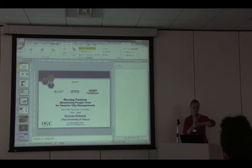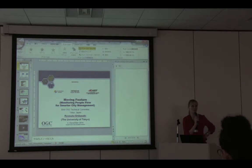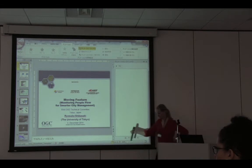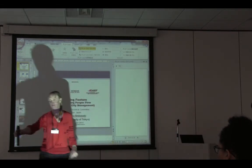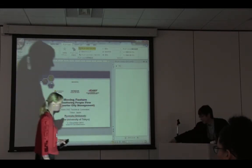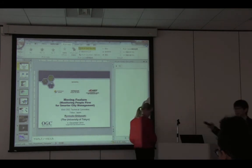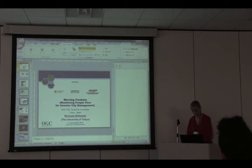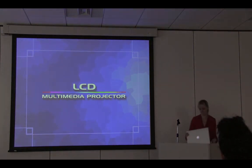Excellent. We definitely have a couple of minutes for questions. Question: The phone data — the cellular phone data — comes as call data records, CDRs. How does that relate to moving features? Is there a lot of transformation needed to go from CDRs to moving features data? What's involved with that?